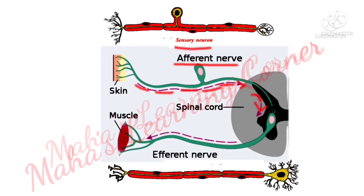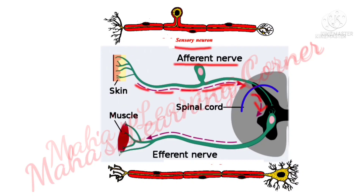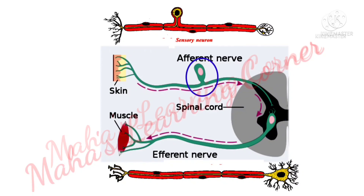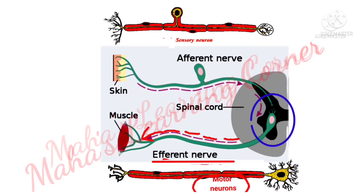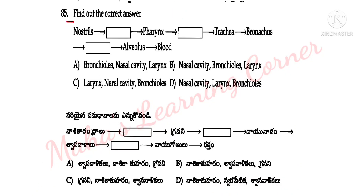Afferent neurons or sensory neurons carry information from receptors in skin or other organs towards the CNS (Central Nervous System). Cell bodies are located outside of the spinal cord. Whereas efferent or motor neurons carry information from CNS to muscles. Cell bodies are located in the ventral horn of the spinal cord.